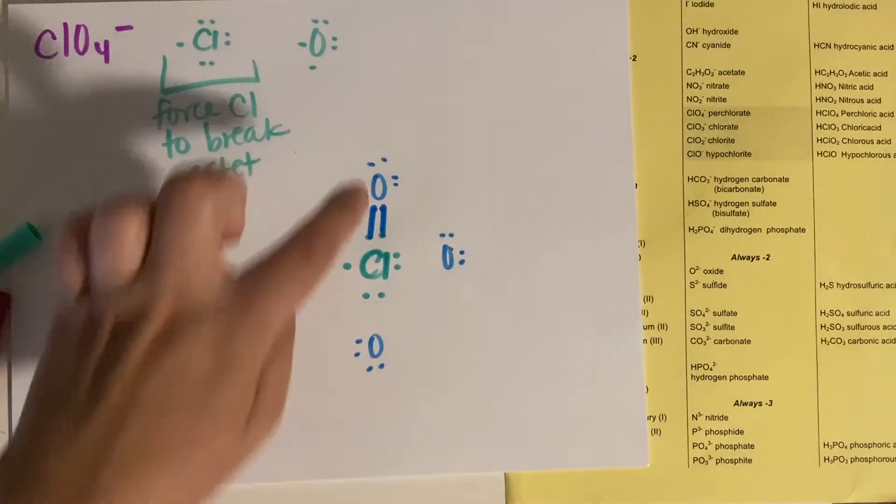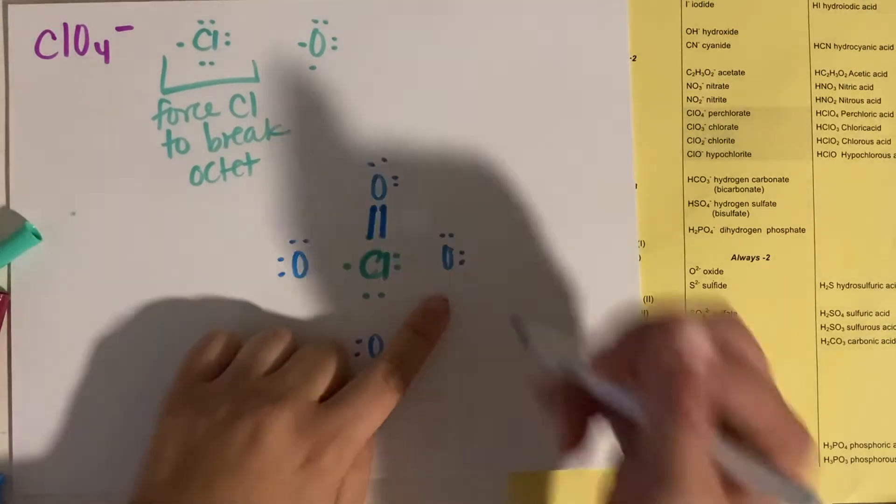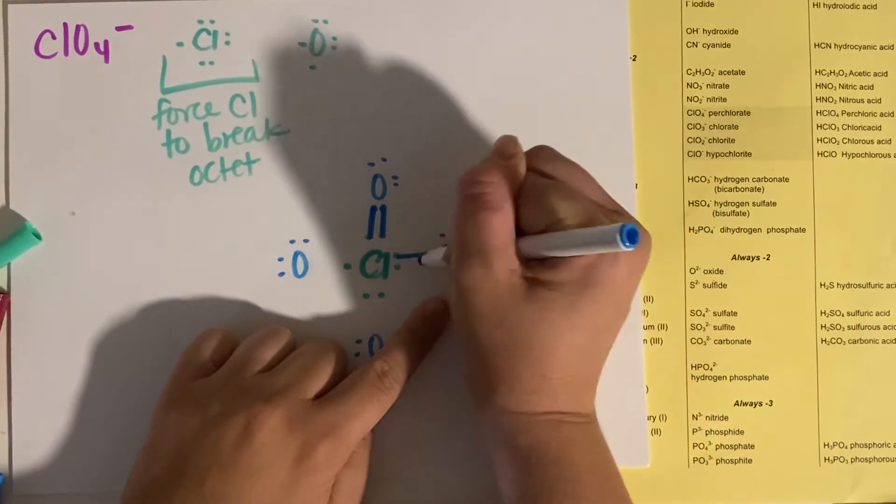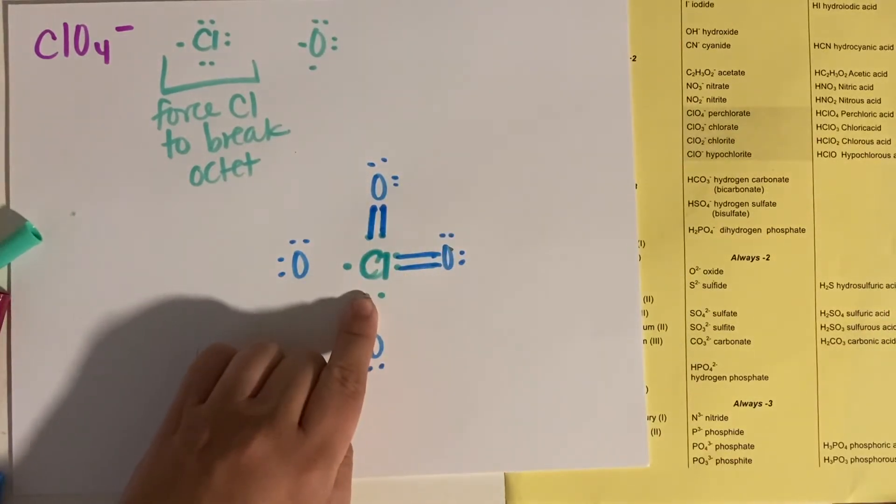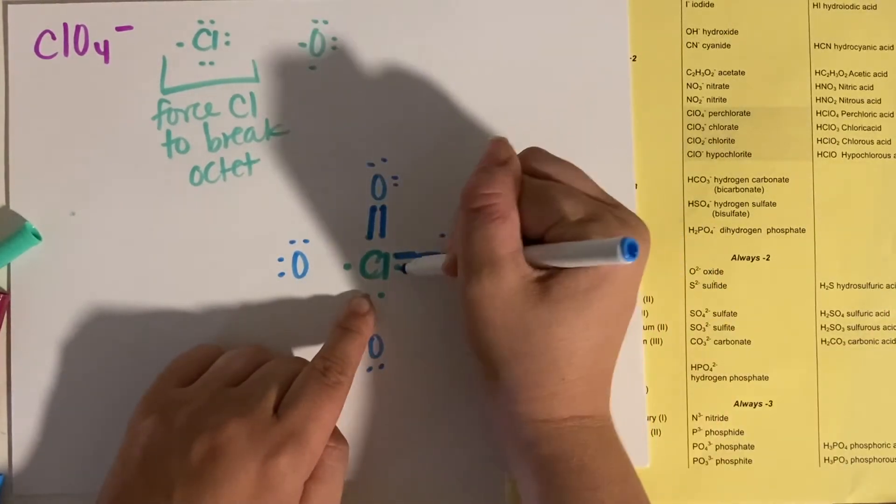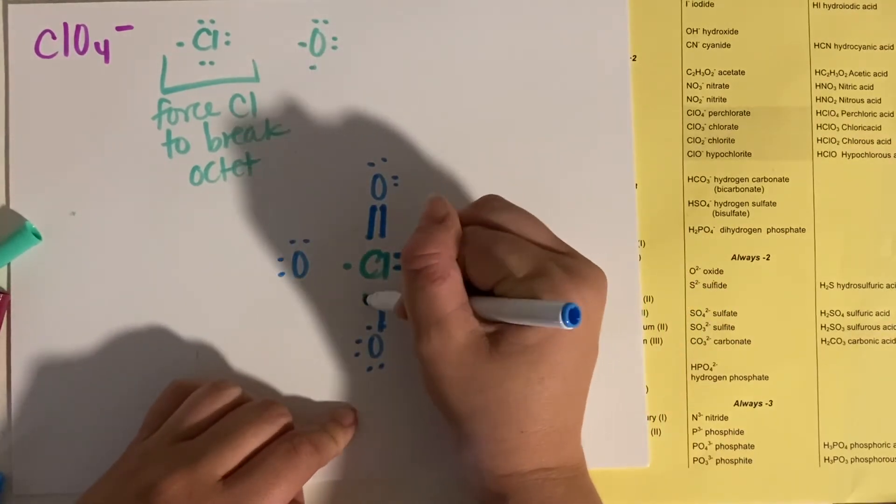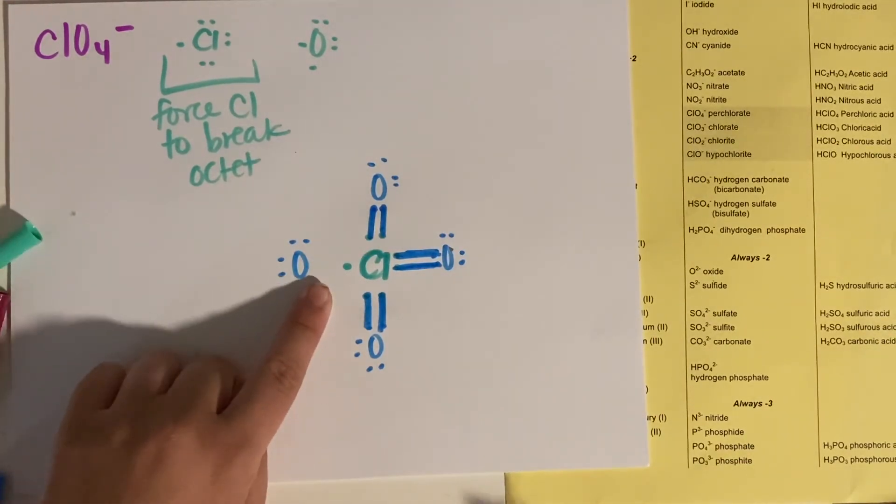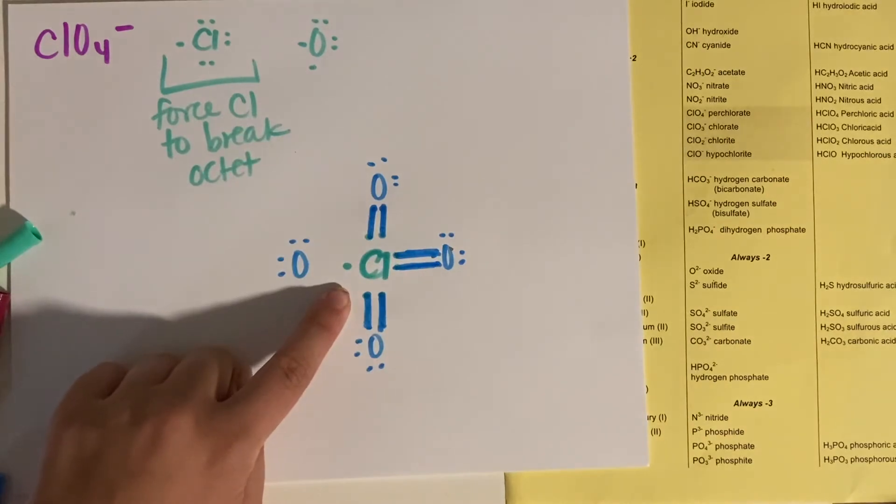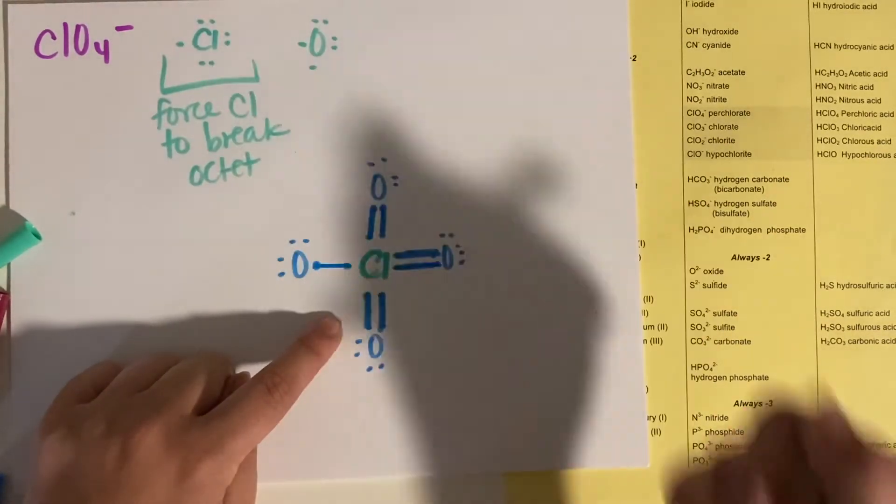But this oxygen is stable. Then this oxygen is going to double bond. So this oxygen is happy. Again, I've broken my octet rule. And this oxygen had two singles, and I'm going to force it to double bond.